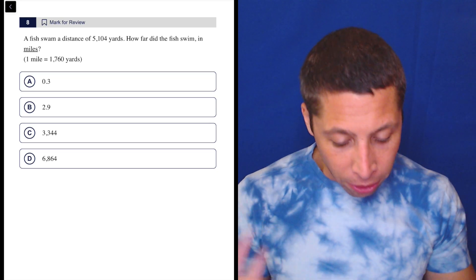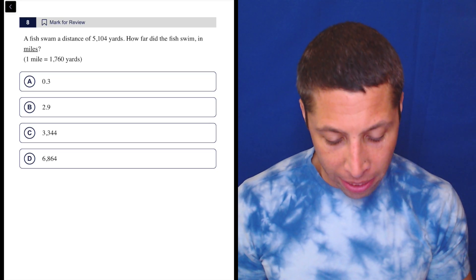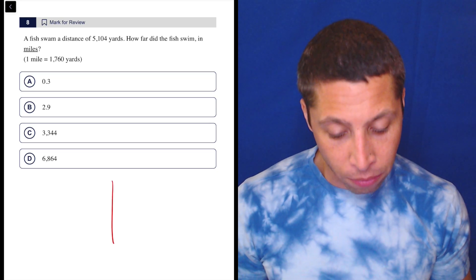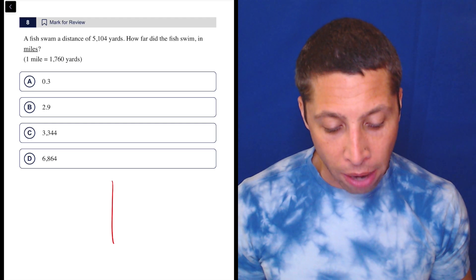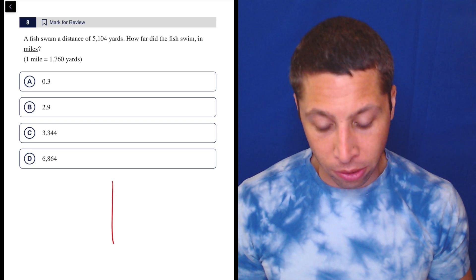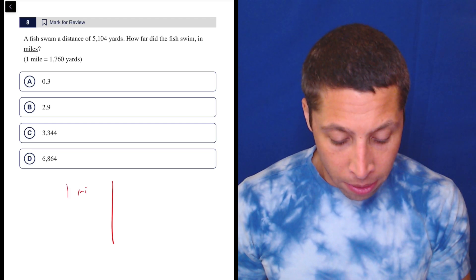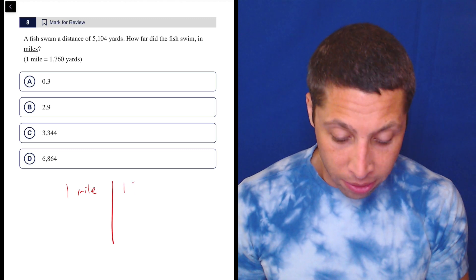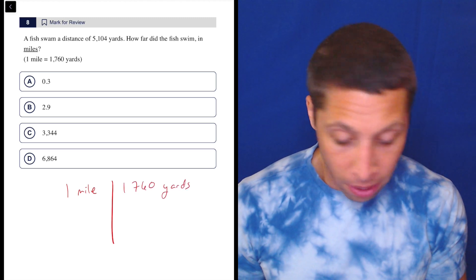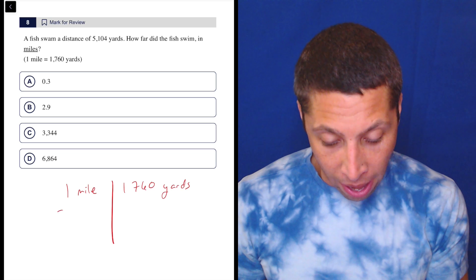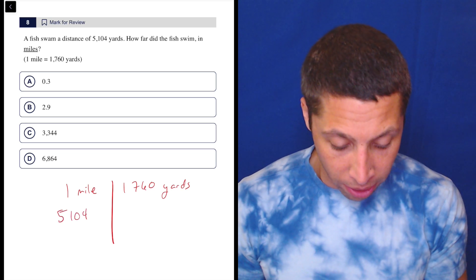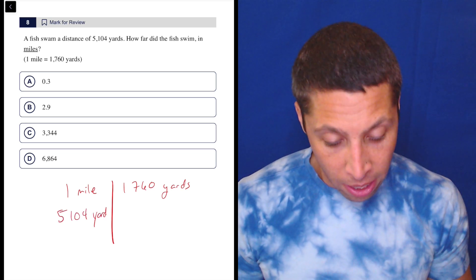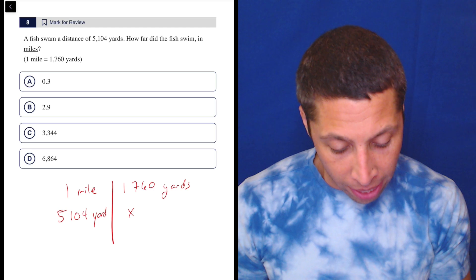Let's just mindfully go into it. We clearly have a unit conversion. So I'm going to make my table. Fish swam a distance of 5,104 yards. How far did the fish swim in miles? One mile is 1,760 yards. Fish swam a distance of 5,104 yards. How many miles is that? X miles.